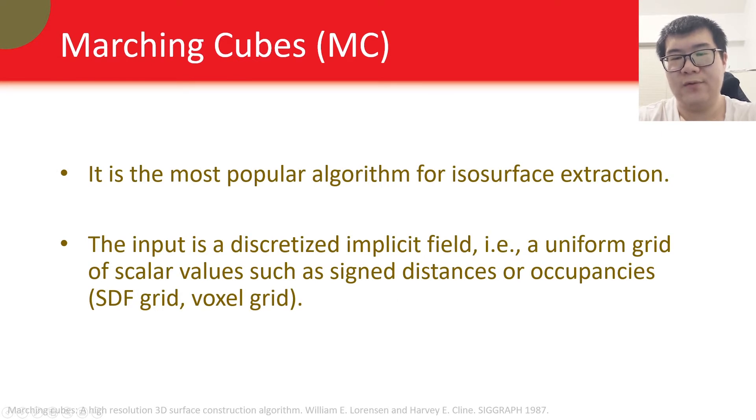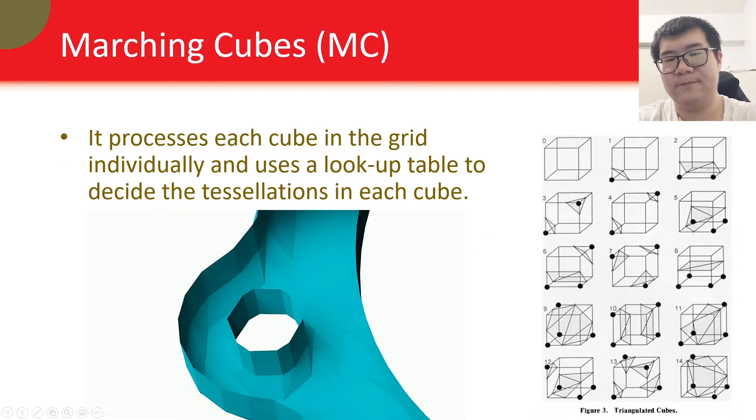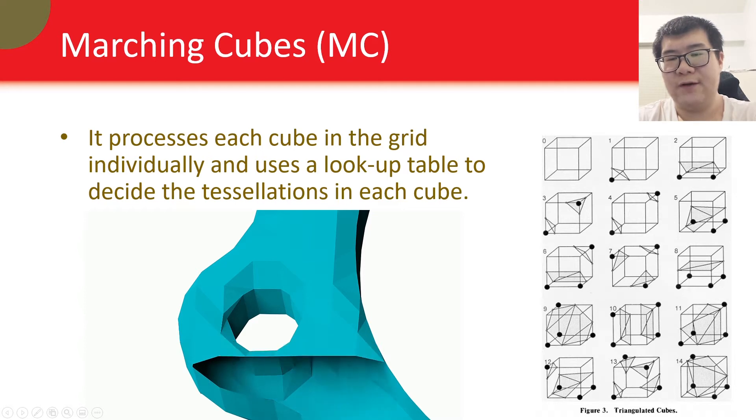First, let me introduce marching cubes to you. It is the most popular algorithm for isosurface extraction, and the input to marching cubes is a discrete hybrid implicit field, which is a uniform grid of scalar values, such as signed distances or occupancies. Marching cubes processes each cube in the grid individually, and uses a lookup table to decide the mesh tessellation in each cube, as shown in the figure below.